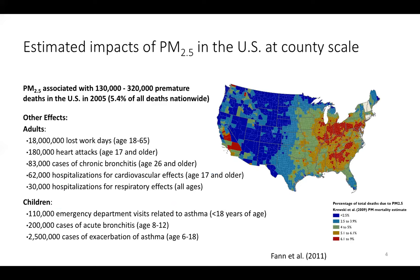Typically, health impact assessments of PM2.5 in the U.S. are done at the U.S. scale, sometimes at the city scale. From my experience at EPA doing cost-benefit analysis for air regulations, the EPA typically runs health impact assessments at a gridded resolution and sums results to the county scale. A recent paper estimated the total burden of PM2.5 in the United States, covering a range of health outcomes.